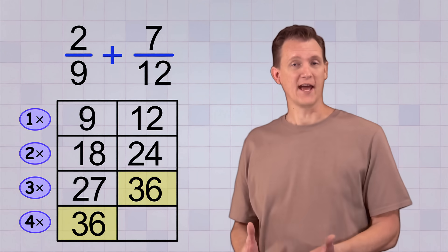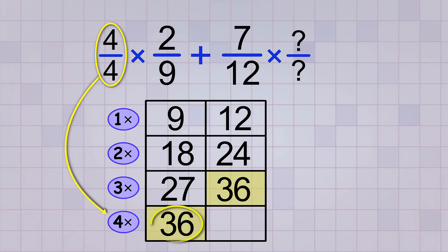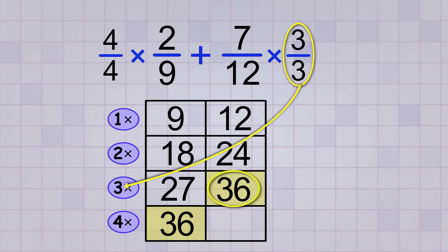Now let's figure out which whole fractions we need to use to make our fractions have that denominator. We use 4 over 4 for our first unlike fraction, since 4 times 9 was 36. And we use 3 over 3 for our second unlike fraction, because 3 times 12 was 36.